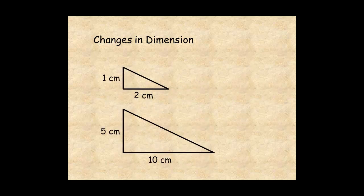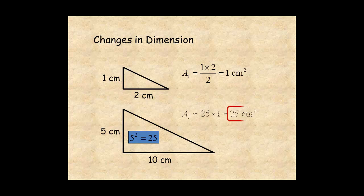In this example, the smaller triangle has height equal to 1 centimeter and base equal to 2 centimeters. So the area is 1 times 2 divided by 2, or 1 square centimeter. The dimensions of the other triangle are 5 times larger. So the area is 5 squared, or 25 times larger, which is 25 square centimeters.